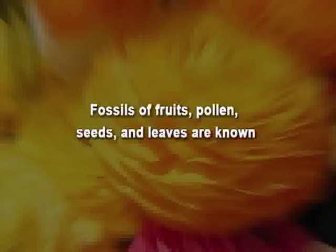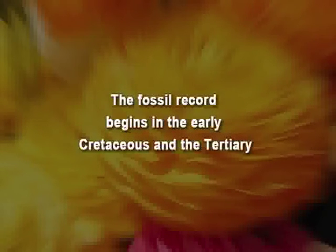Coming to the fossil record: fossils of fruits, pollens, seeds, and leaves are known from several dozen locations. The fossil record begins in the early Cretaceous and continues throughout the Tertiary period. In most cases, the fossils are assigned to presently existing (extant) genera and show a close relationship to particular extant genera.